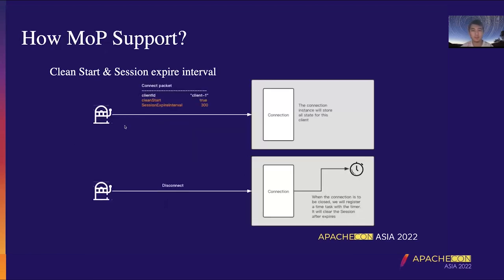In MOP, each connection has a connection object that is responsible for storing all state associated with the connection. For Clean Start support, when the client sets Clean Start to true on connect, MOP will find the current state according to the client ID. If the state exists, it will first perform cleanup work and then create a new connection. If Clean Start is false, MOP will reuse the previous state. For the Session Expiry Interval, the value will be stored when the client performs connect. When the socket is disconnected, MOP will schedule a cleanup task with a timer to clean up the related session.